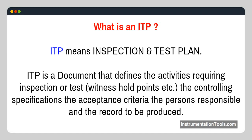What is an ITP? ITP means inspection and test plan. ITP is a document that defines the activities requiring inspection or test, witness and hold points, the controlling specifications, the acceptance criteria, the persons responsible, and the records to be produced.